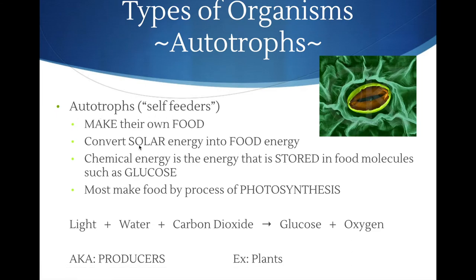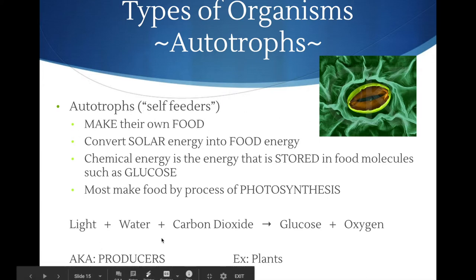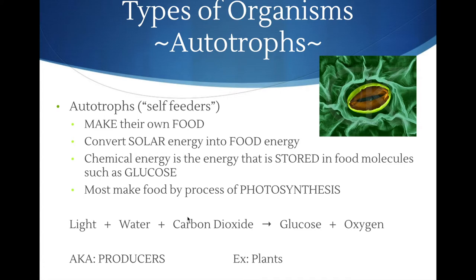Autotrophs are self-feeders — the key is that autotrophs are plants, also known as producers. I've given you the formula for photosynthesis here. Feel free to pause the video to write this down, but the big takeaway is that autotrophs automatically make their own food internally.